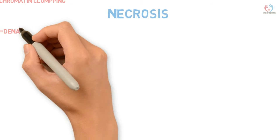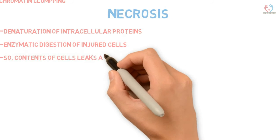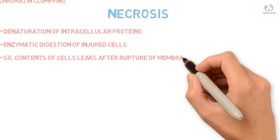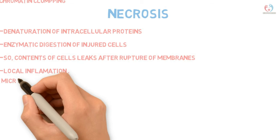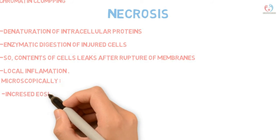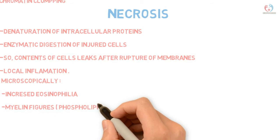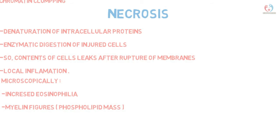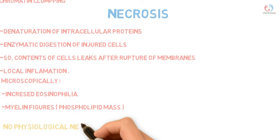Necrosis means enzymatic digestion of injured cells. Denaturation of intracellular proteins and rupture of the cellular membrane occur, causing cell contents to leak into the plasma along with a local inflammatory reaction. Microscopic features include increased eosinophilia — increased pink color in H&E stain — and myelin figures, which are phospholipid masses formed from condensed cell membranes. Necrosis is always pathological; there is no physiological necrosis.